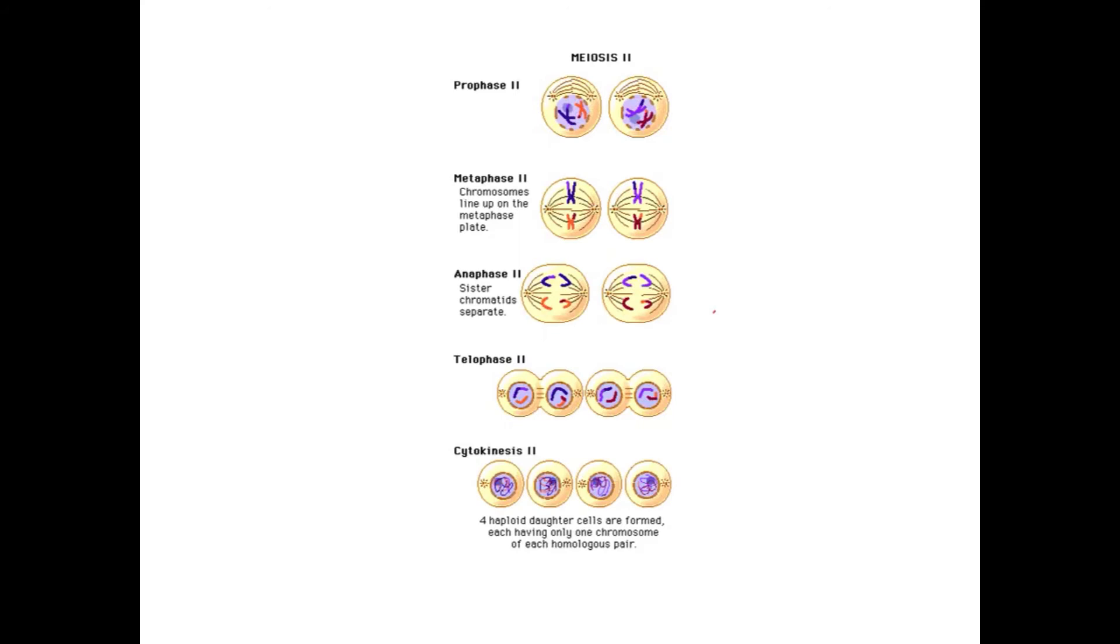In metaphase 2, remember, metaphase M for the middle, the chromosomes line up along the metaphase plate or the equator of the cell. We can see here that they're lined up in a nice single fashion. At this point, we're still in this X shape with the two sister chromatids attached. During anaphase, they're moving away, but this time, our X is being divided into two separate sister chromatids.